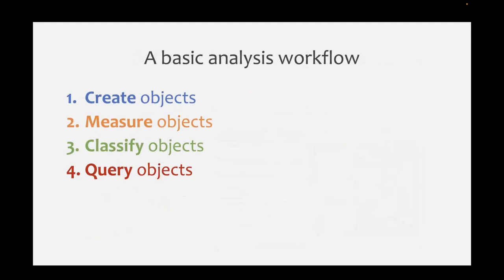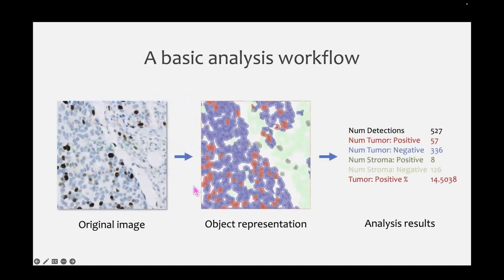So a basic analysis workflow: we want to go from our input image with our billions of values and have our summary measurements of just a few values. QPath does this via an intermediate object representation. The big thing you need to think about when you're analyzing images in QPath is how do you get that object representation and then how do you query it at the end. We need to check our image, somehow create objects, often make measurements of those objects, often classify those objects, and then query them. The measuring and classifying depends upon what you care about - if you just wanted to count cells in an image, you wouldn't necessarily have to measure or classify them, you'd just count everything you detected. Creating objects and querying them are typically required for analysis in QPath.